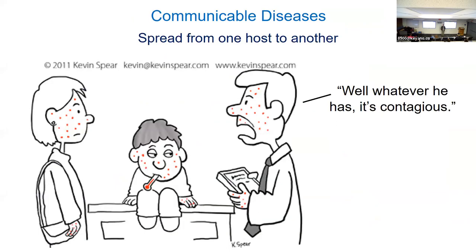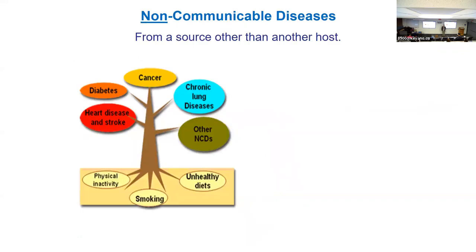Back to epidemiology and disease transmission. Last time we were defining a bunch of things — epidemic versus pandemic — and we talked about how epidemiology makes use of statistics. Now we're going to transition to disease transmission and some of the methods by which it occurs. First, another definition: communicable diseases — things that are spread usually from person to person, or one host to another. This includes many of the diseases we're talking about, like the cold or the flu, where someone sneezes or coughs and virus particles spread to another person.